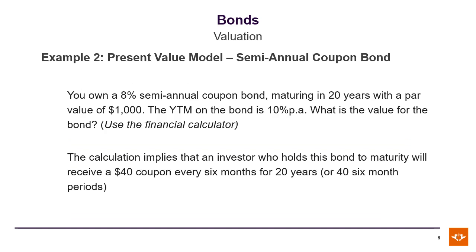We're going to continue on with the example, but now we're going to use our financial calculator. All the information remains the same: it's an 8% semi-annual coupon bond, term to maturity 20 years, $1,000 par value, and 10% per annum. So again, $40 every six months, giving us 40 six-month periods or 40 coupon payments.